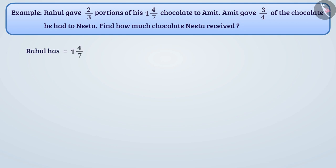Rahul has 1 and 4/7 chocolate that is 11/7 chocolate. Amit is getting 2/3 part of this chocolate that is Amit is getting 2/3 × 11/7 chocolate. Neeta is getting 3/4 part of it.